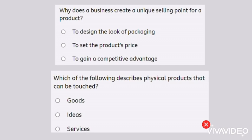Here are two quiz questions. Why does a business create a unique selling point for a product? Second question: which of the following describes the physical products that can be touched? The answer to the first question is to gain a competitive advantage, because it needs to stand out and gain higher sales than a competitor. The answer to the second question is goods.